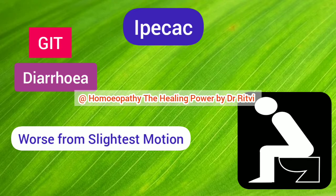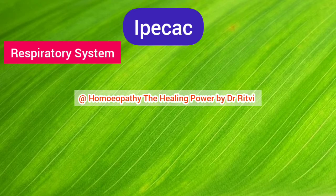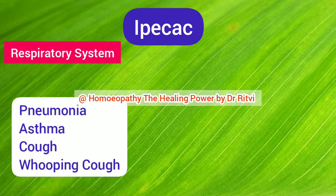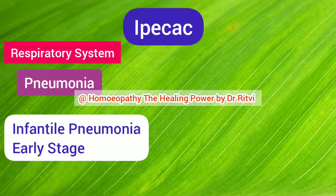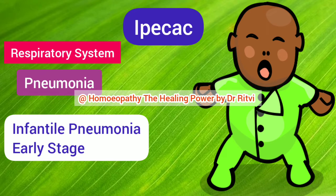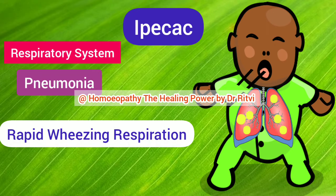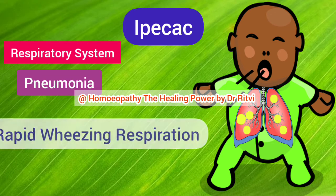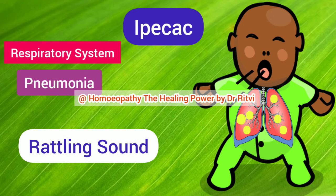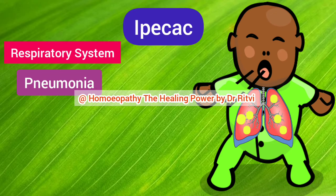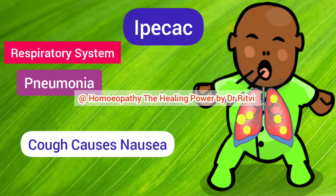Ipecac is a most important medicine for respiratory diseases — indicated in pneumonia, asthma, cough, and whooping cough. In pneumonia, Ipecac is indicated in the early stage, especially in infantile pneumonia where the chest is loaded with mucus. There is rapid wheezing respiration, blueness of skin, and pale face. The chest is full of phlegm and a fine rattling sound is present. Along with this there is nausea and vomiting, and cough which causes nausea.